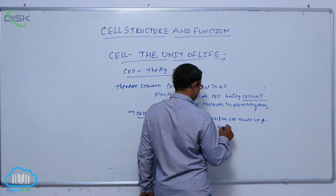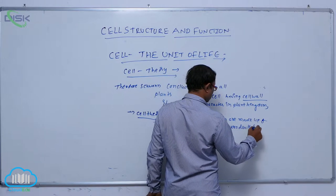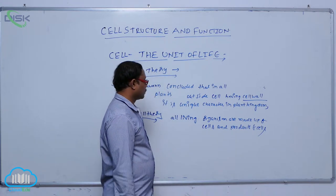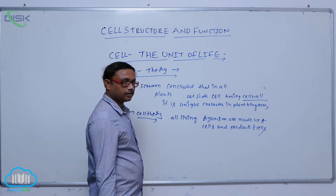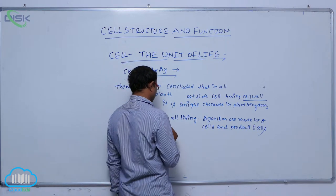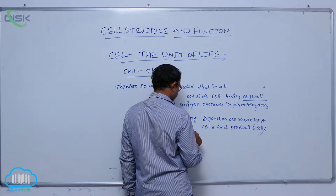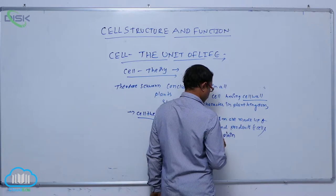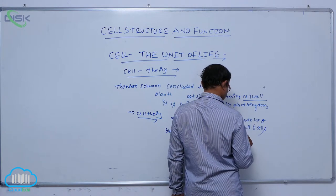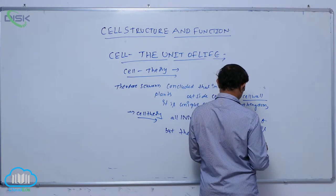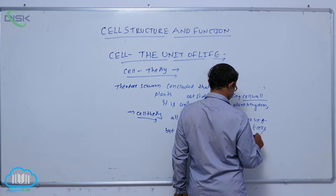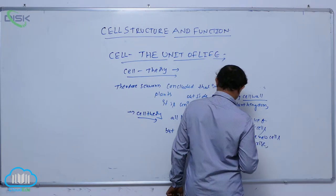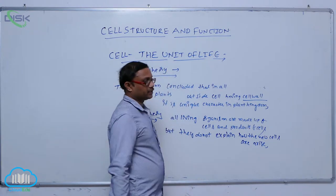All living organisms are made up of cells and products of cells. However, the original cell theory did not explain how new cells arise. That is known as a demerit — they did not provide a final shape to cell theory.